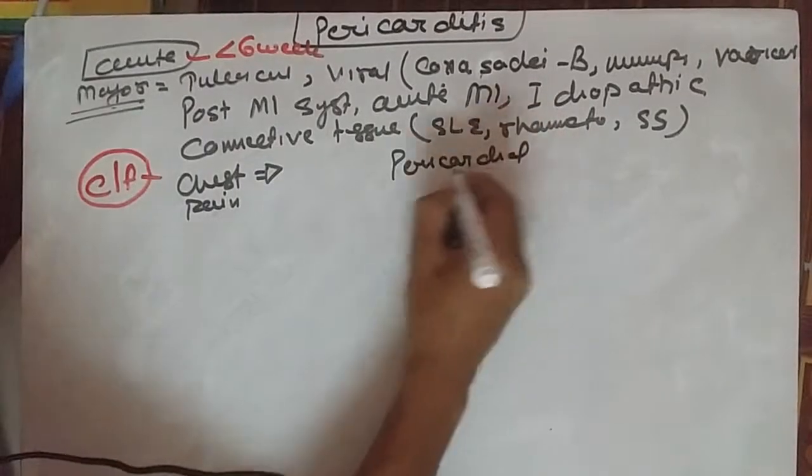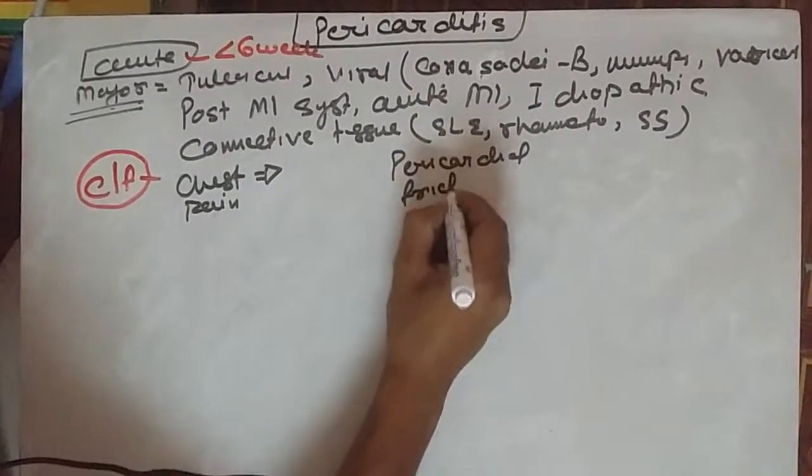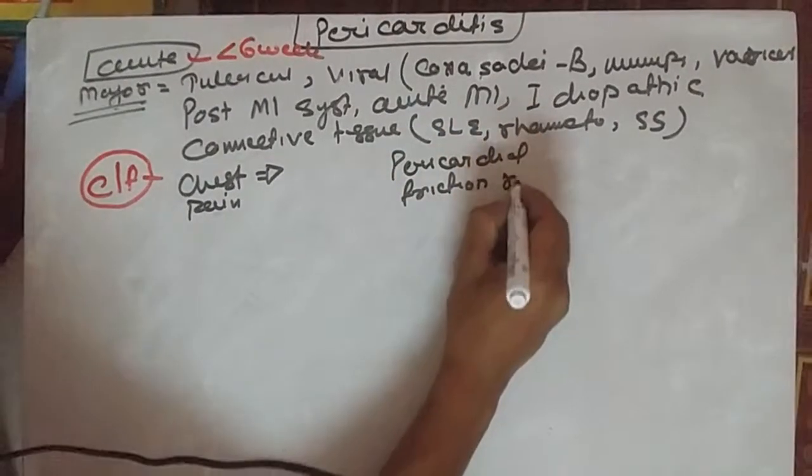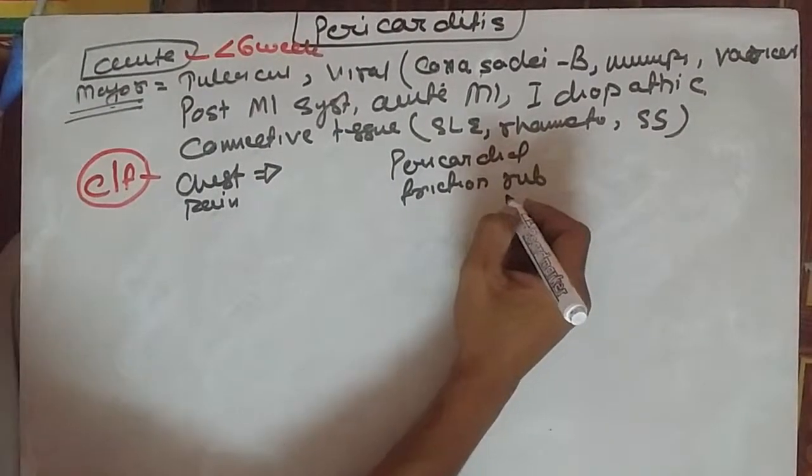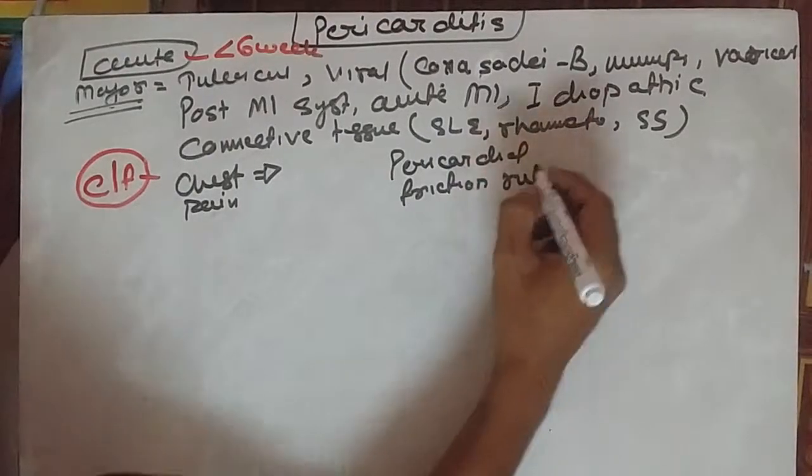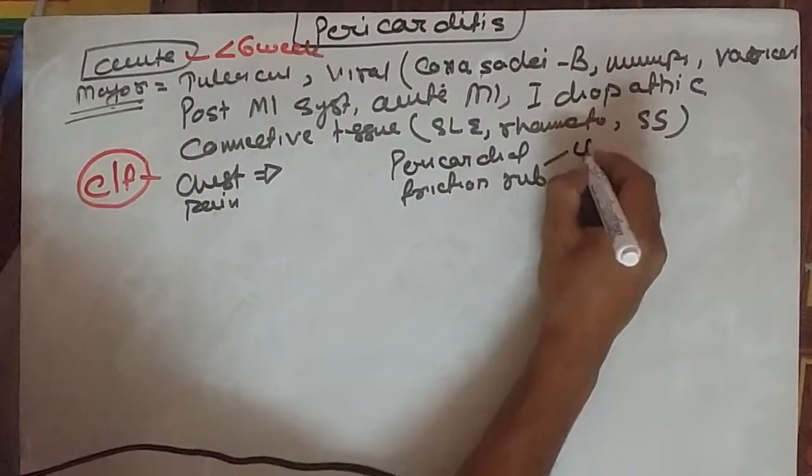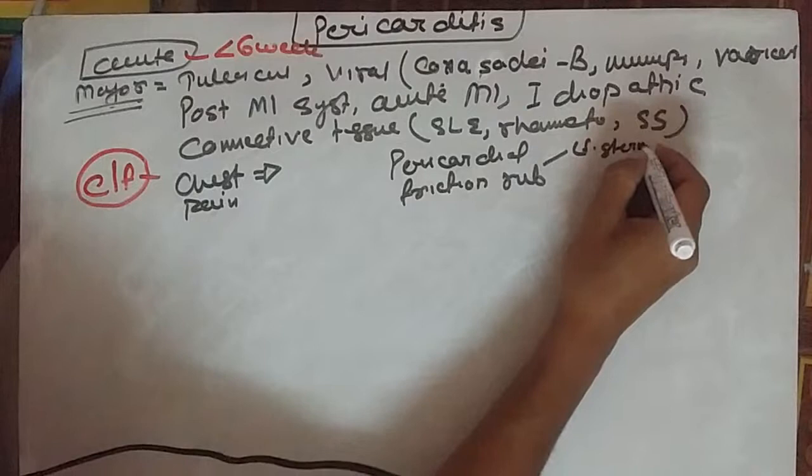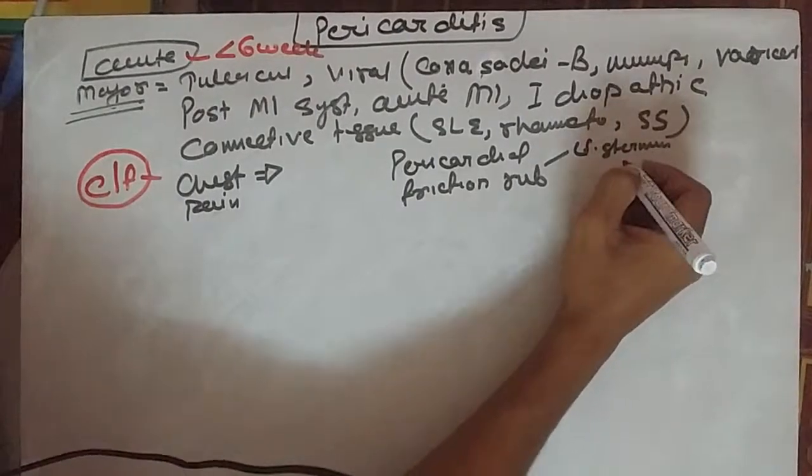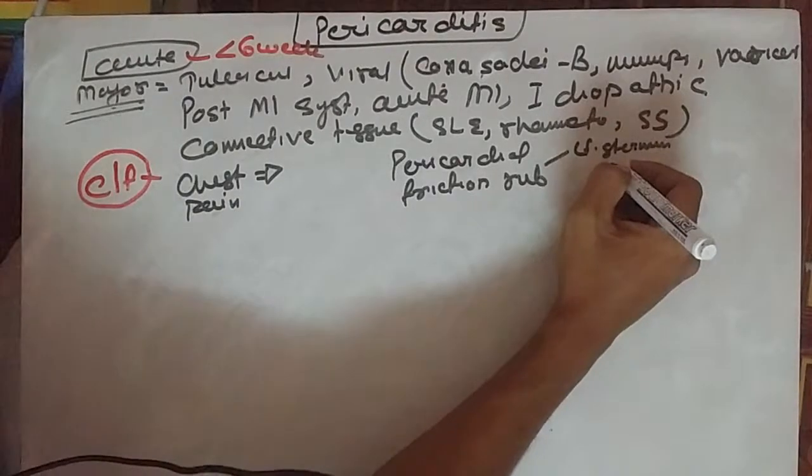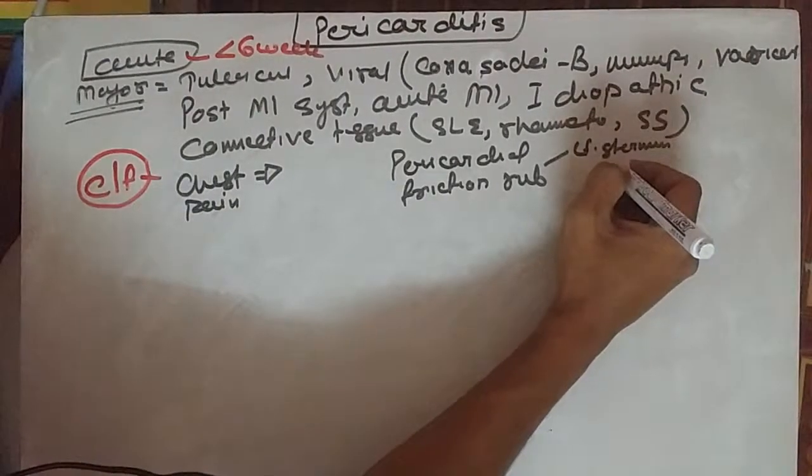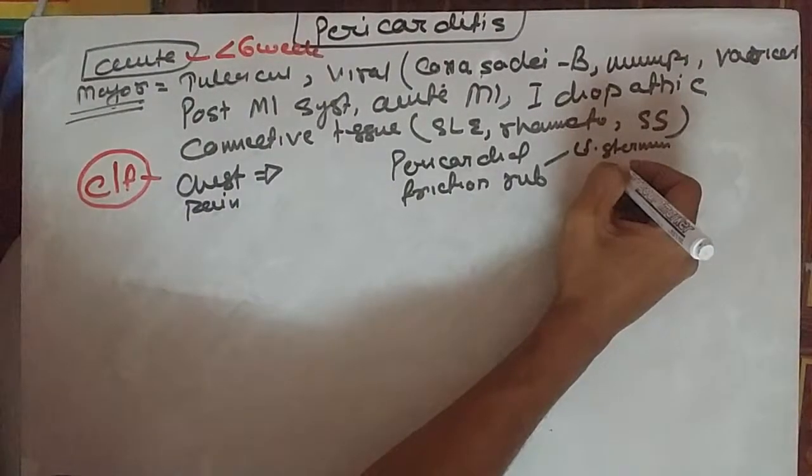The next symptom is pericardial friction rub. It's a superficial scratching sound best heard on the left sternum, and it's louder when applying pressure with the diaphragm of the stethoscope.